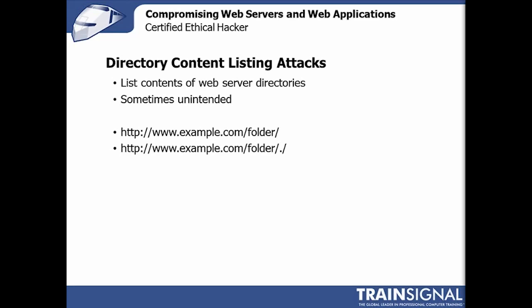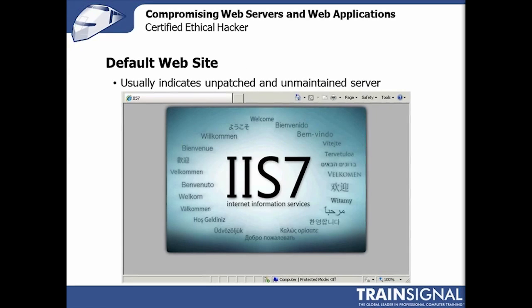What I use directory listing for typically is footprinting a server — I'll look for files I should be able to see, and potentially files I shouldn't. I'll pull every file back to my client and examine it if I don't think directory listing should be enabled. The IIS 7 default page — that pretty bitmap — means an administrator has installed IIS 7 and not configured it at all. You might think that means nobody's using it, but it actually means the default code for IIS has been installed and you now know all of it.